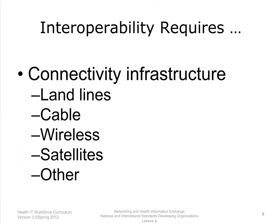In order to communicate, there must be a path for communication. The connectivity infrastructure is an important component for interoperability. In many settings, how to accomplish the physical connectivity is a challenge. We have many choices: landlines, cable, wireless, satellites, and other technologies. Many factors including costs, culture, the environment, and what currently exists influence the selection. Beyond the physical connections, which were covered in detail in the first unit, there are other requirements or standards that must be used to be interoperable.